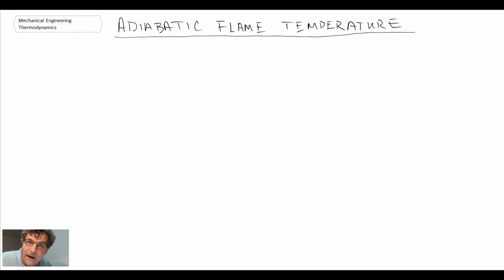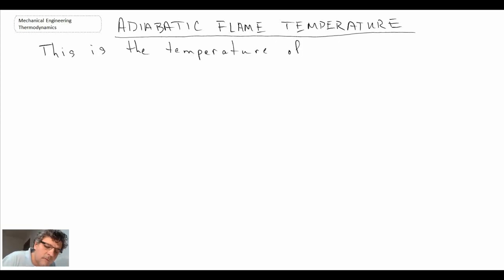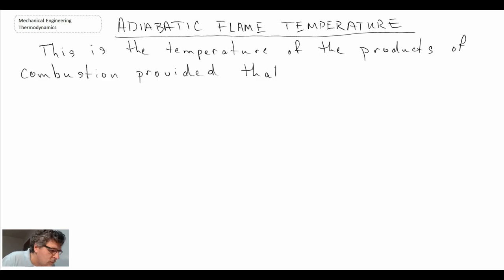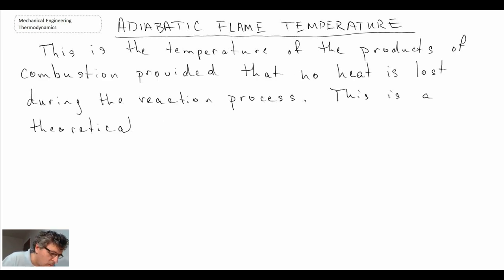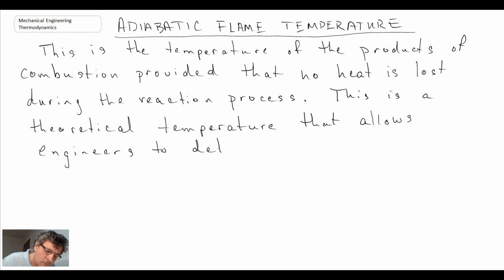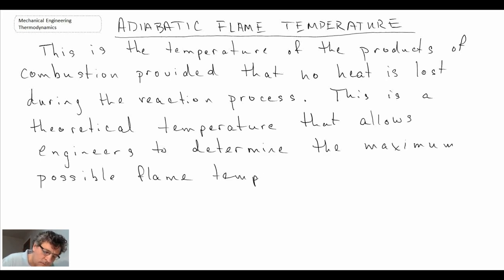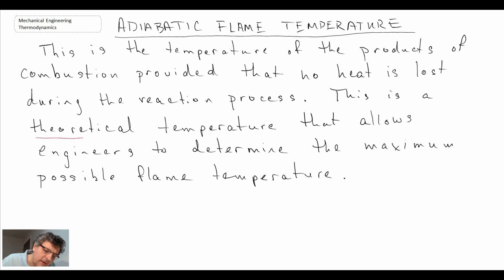Adiabatic means that there's no heat transfer, so we have combustion without heat transfer — that's the hottest it will be able to get. There's no heat loss, so this is a theoretical temperature and it is the maximum possible flame temperature.